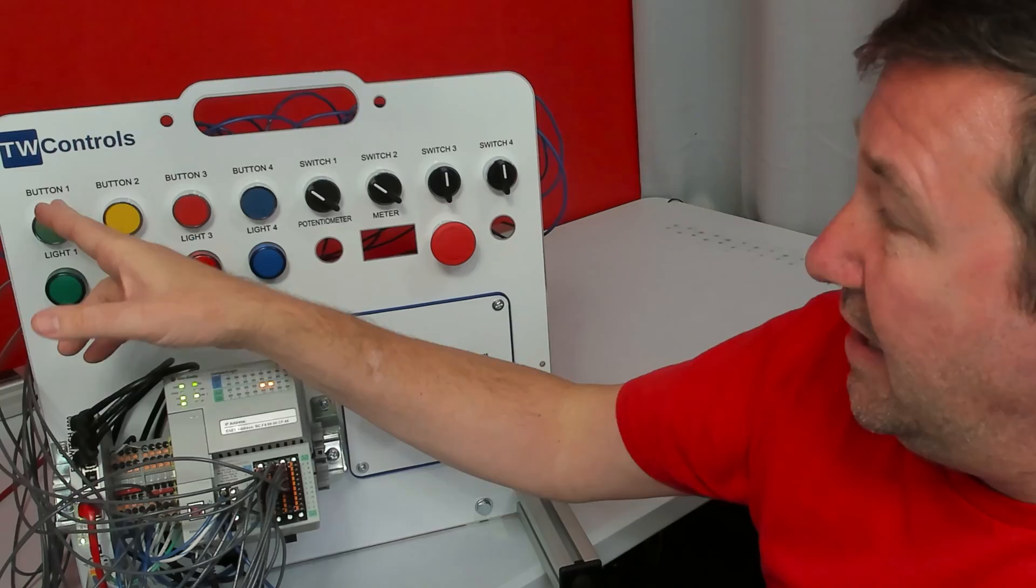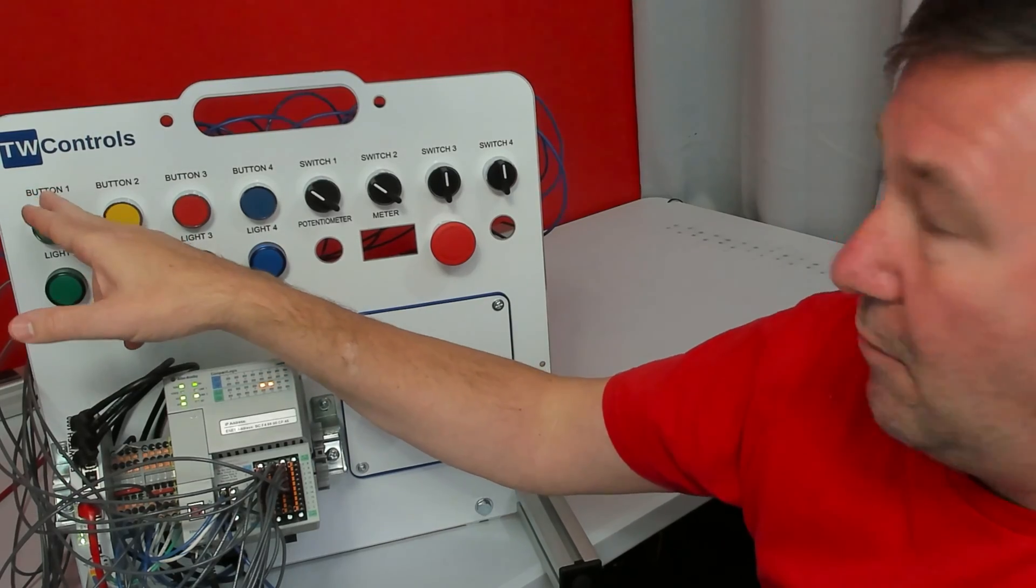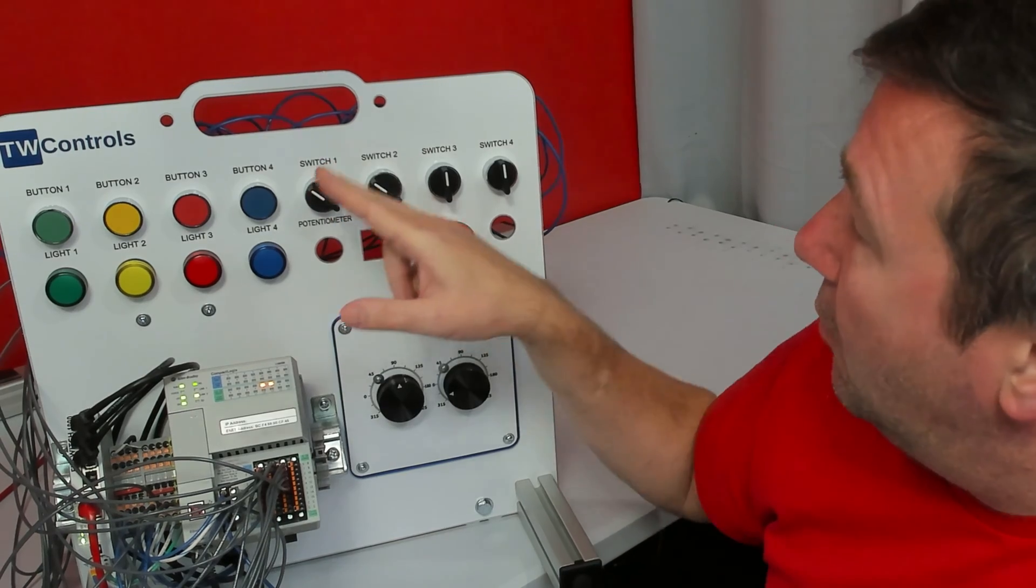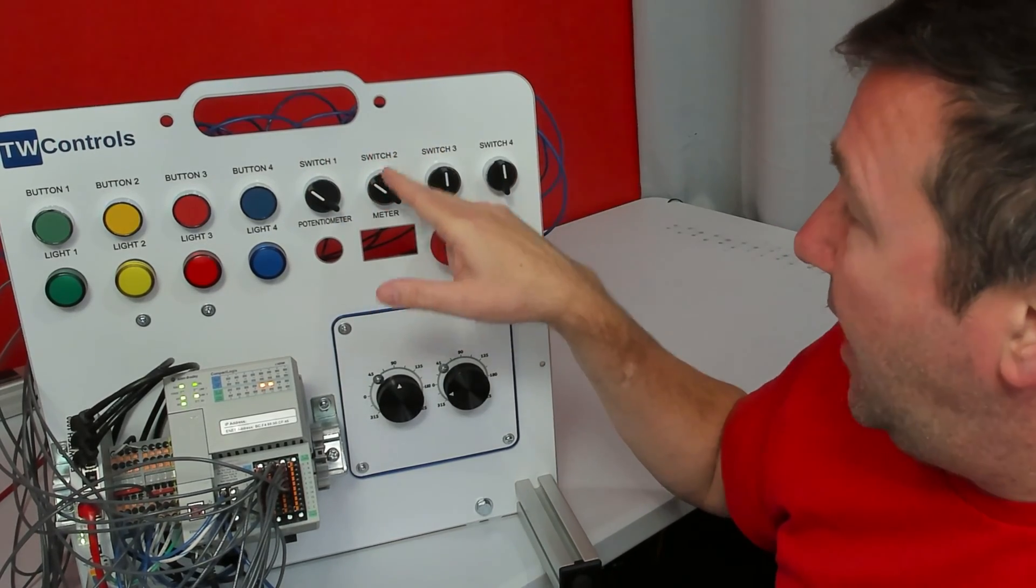We're going to hit it a little bit more here in just a second. In addition to wiring buttons one through switch one to input zero through four, we're also going to wire switch two to input five.